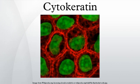There are two types of cytokeratins: the acidic type I cytokeratins and the basic or neutral type II cytokeratins. Cytokeratins are usually found in pairs, comprising a type I cytokeratin and a type II cytokeratin.